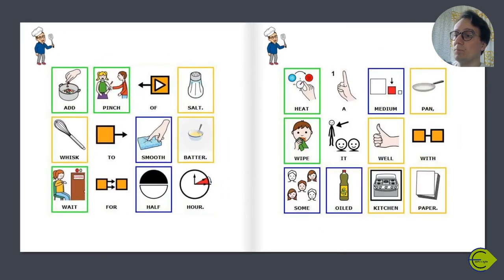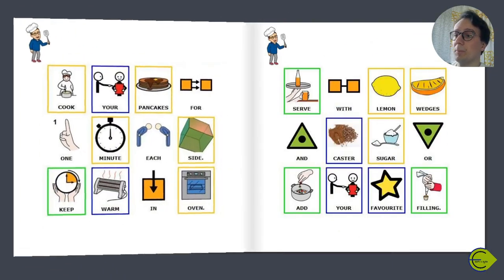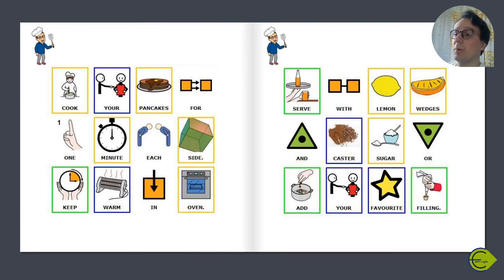Add a pinch of salt, whisk to smooth batter, wait for half an hour. Heat a medium pan, wipe it well with some oiled kitchen paper. Cook your pancakes for one minute each side until golden, keep warm.